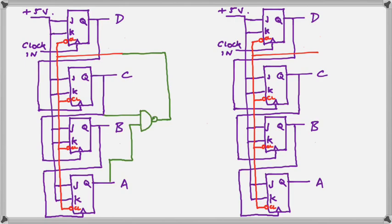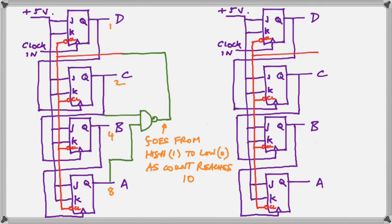Now we have added a NAND gate there, which takes its input from the C output and the A output. So when the count reaches 10 or 1, 0, 1, 0, that output gate will go from a 1 to a 0.